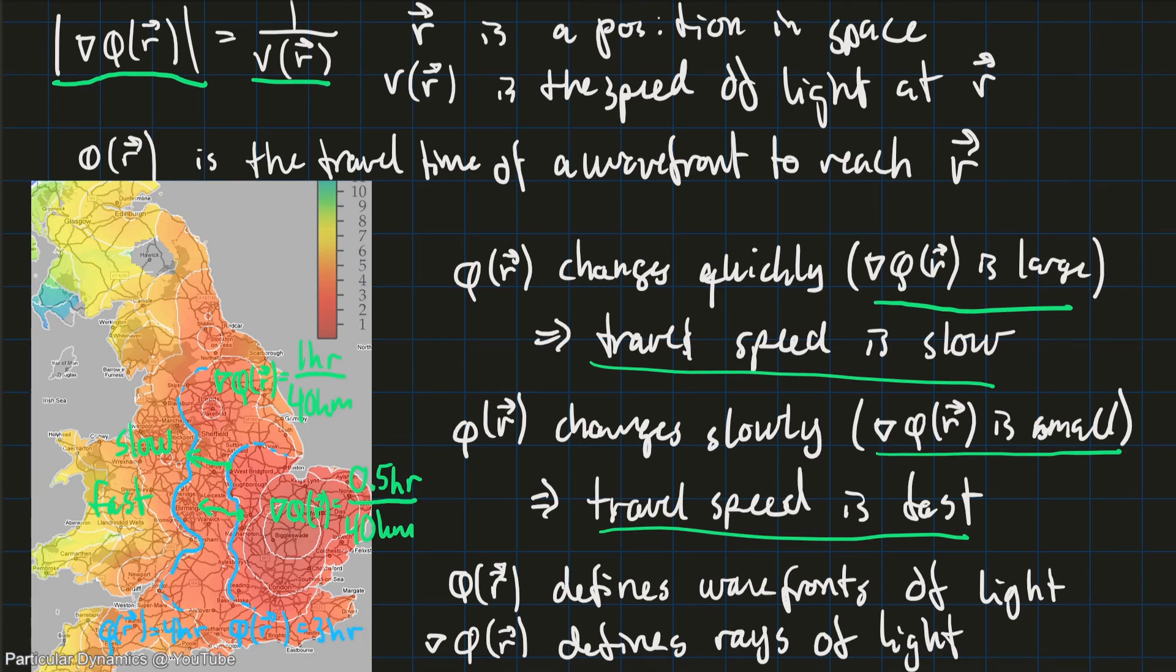That's a good place to end part one. In part two we're gonna look at how we can take this Eikonal equation and we're gonna transform it into a set of differential equations. And these are the equations that can be used to simulate the path that light takes through a medium. So, thanks for watching. See ya.